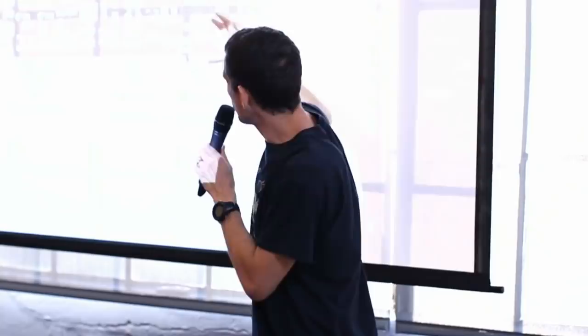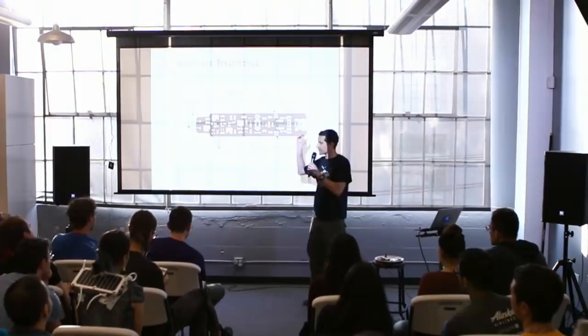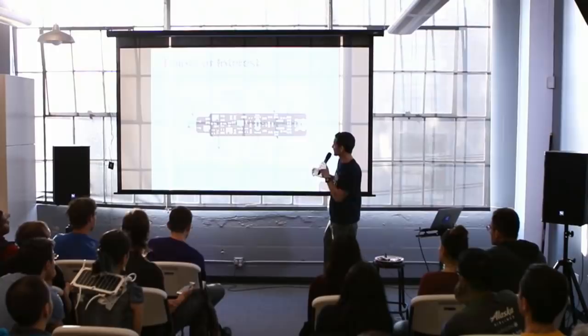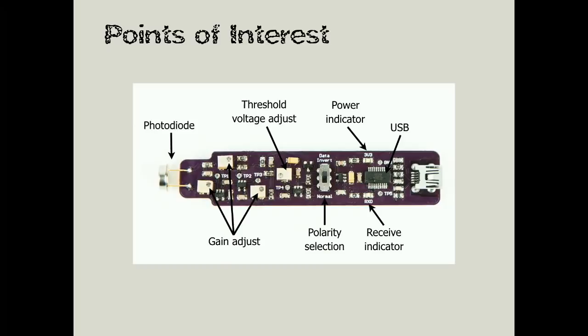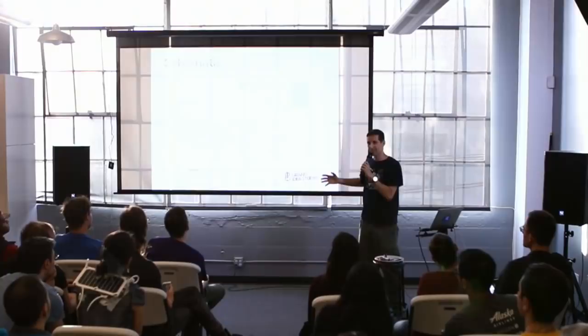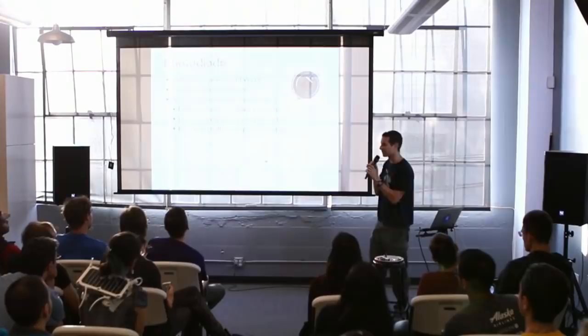Here's what the final board looks like. All the intermediate boards are also available on my website. The board follows the block diagram — photodiode receiver over here, the amplifiers here, the threshold comparator here, and there's a little switch so you can invert the polarity if you're receiving a signal that's inverted. That feeds into an FT231X USB to serial adapter, and then out to the computer. That's what the schematic looks like — I won't go through all of it, but I'll go into little pieces of each section.